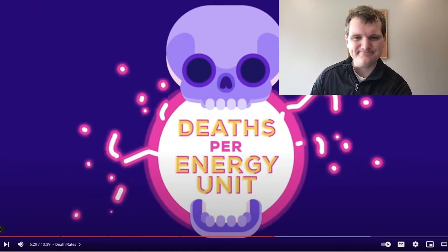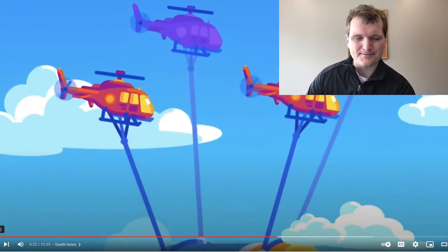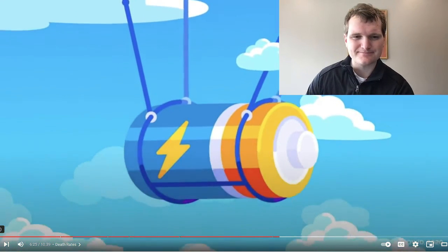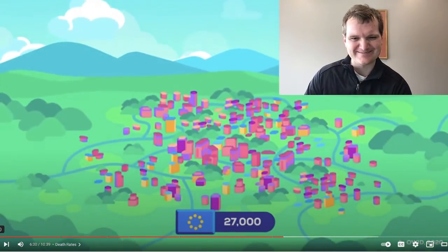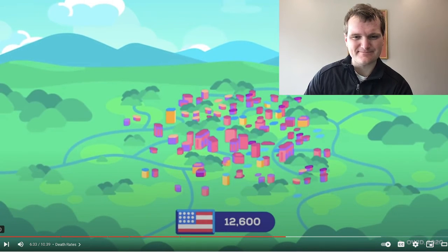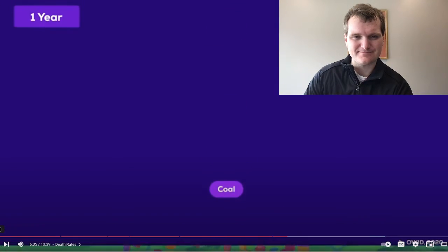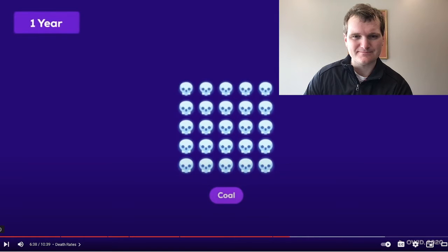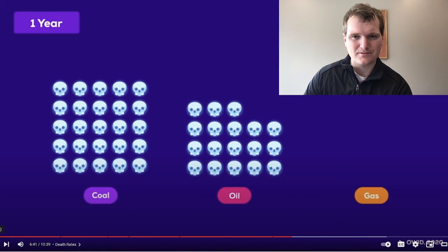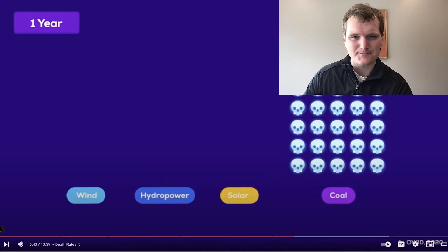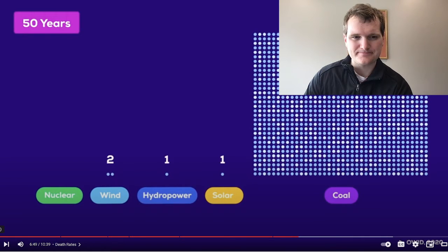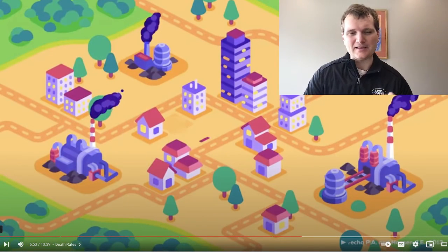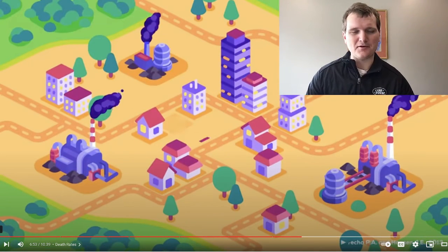Deaths per energy unit produced. A few studies have compared the death rates from different energy sources per one terawatt hour. That's about the annual energy consumption of 27,000 EU citizens, or 12,600 US citizens. To produce that much energy for one year, coal causes 25 deaths, oil causes 18, and natural gas 3. Renewable energy causes one death every few decades. And nuclear, in the worst case, nuclear energy would cause one death every 14 years.